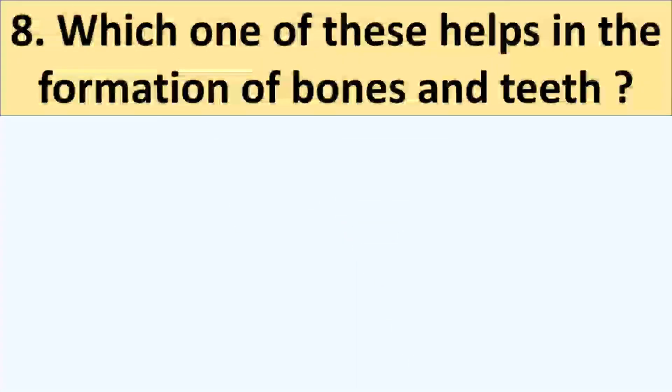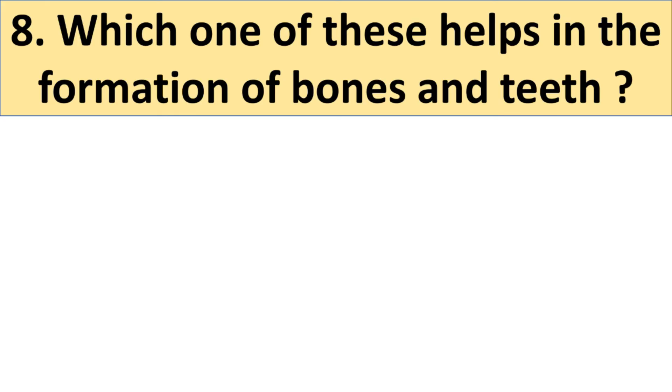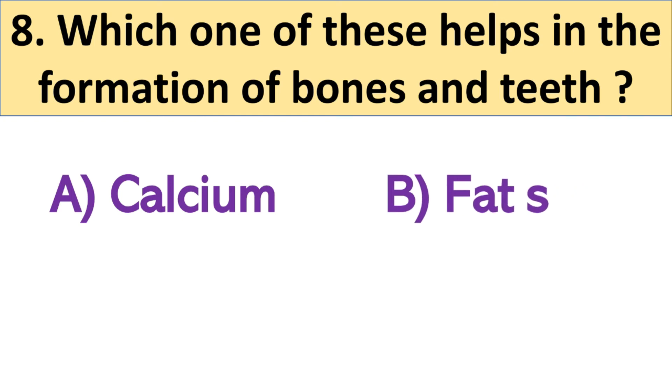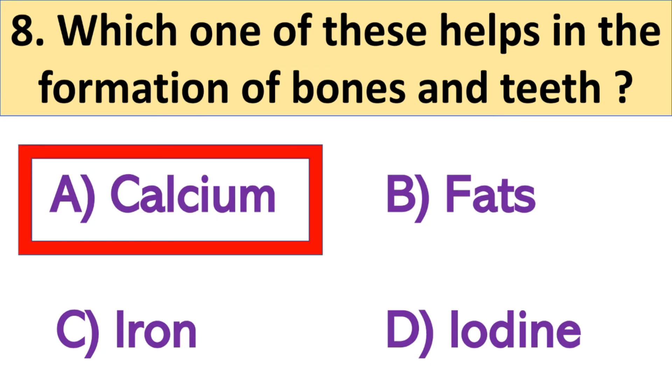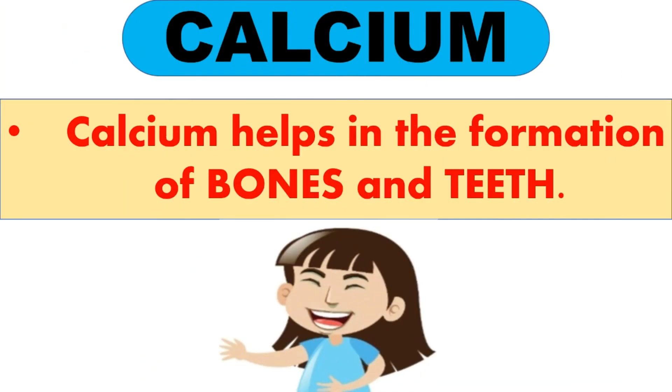Come to the next question. Which one of these help in the formation of bones and teeth? And your options: A. Calcium, B. Fats, C. Iron and D. Iodine. Think about the answer. And the right answer is A. Calcium. So calcium helps in the formation of bones and teeth.